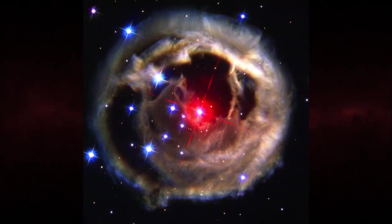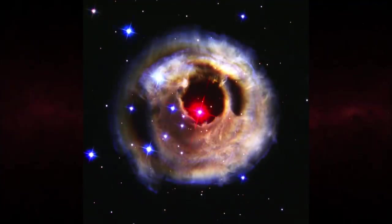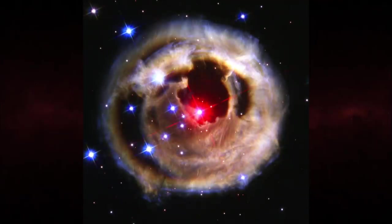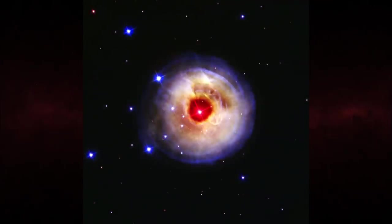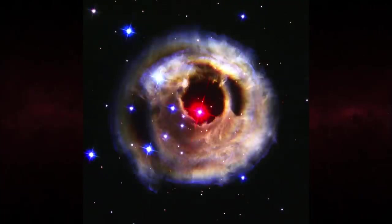Month after month, Hubble recorded the initial flash of light from the star as it scattered and reflected off the surrounding dust. Viewed in sequence, the result creates the illusion of a cosmic flower in bloom.